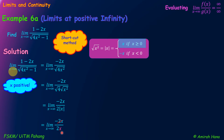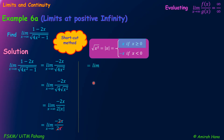After that, we can simplify 2x in the numerator and 2x in the denominator. This gives us the limit as x approaches infinity of negative 1. Since we have the limit of a constant, there is no x to substitute, so the answer equals negative 1. This is our final answer.